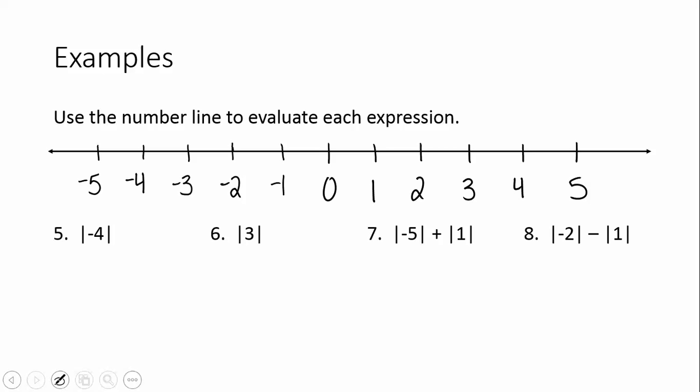Let's look at some examples. Use the number line to evaluate each expression. Number 5: the absolute value of negative 4. Here's negative 4 graphed on the number line. How far away is negative 4 from 0? We can count: 1, 2, 3, 4. So the absolute value of negative 4 is 4.